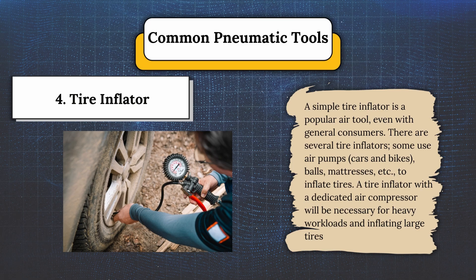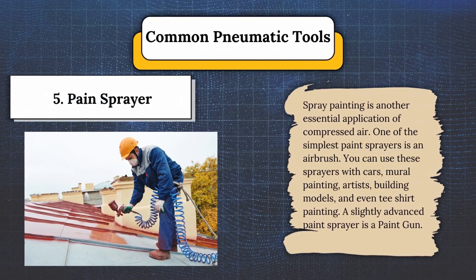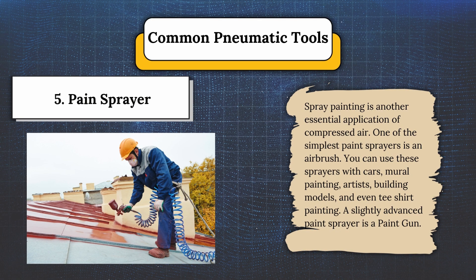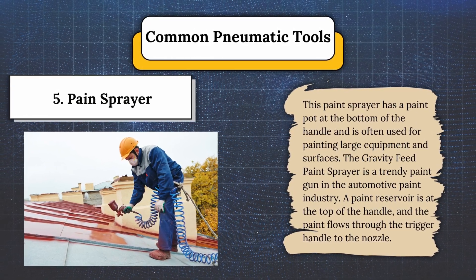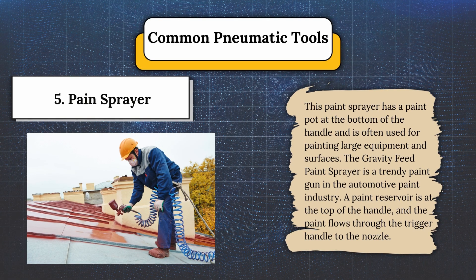A tire inflator with a dedicated air compressor will be necessary for heavy workloads and inflating large tires. Number five, paint sprayer — spray painting is another essential application of compressed air. One of the simplest paint sprayers is an airbrush, usable for cars, mural painting, artists, building models, and t-shirt painting. A slightly advanced paint sprayer is a paint gun, often used for painting large equipment and surfaces. The gravity feed paint sprayer is a popular paint gun in the automotive paint industry, where a paint reservoir at the top of the handle allows paint to flow through the trigger to the nozzle.